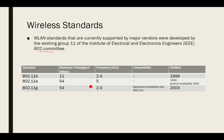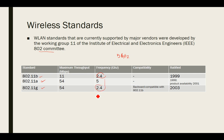The 802.11a standard operates in the unlicensed 5 GHz band, making its transmission vulnerable to interference from microwaves and cordless phones. The 802.11b and 802.11g standards operate in the 2.4 GHz band, where signal strength is negatively affected by water, metal, and thick walls. These standards divide the 2.4 GHz band into 14 overlapping channels; channels 1, 6, and 11 do not overlap and can be used to set up multiple networks.